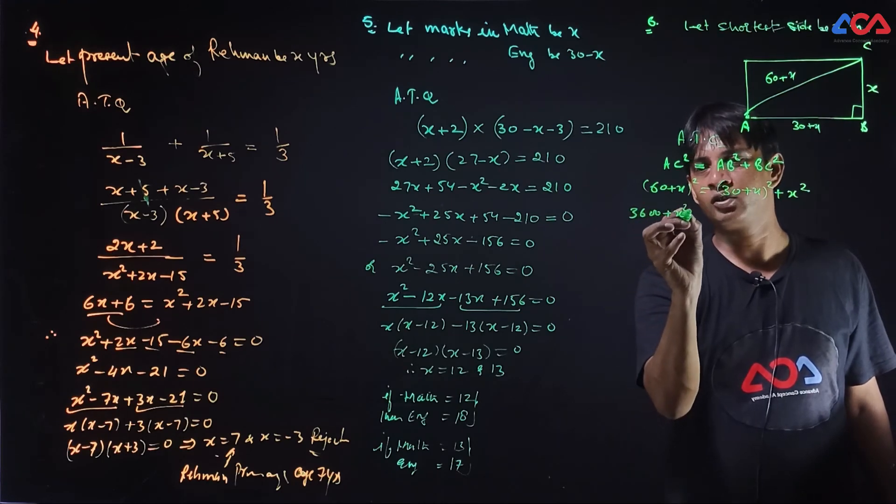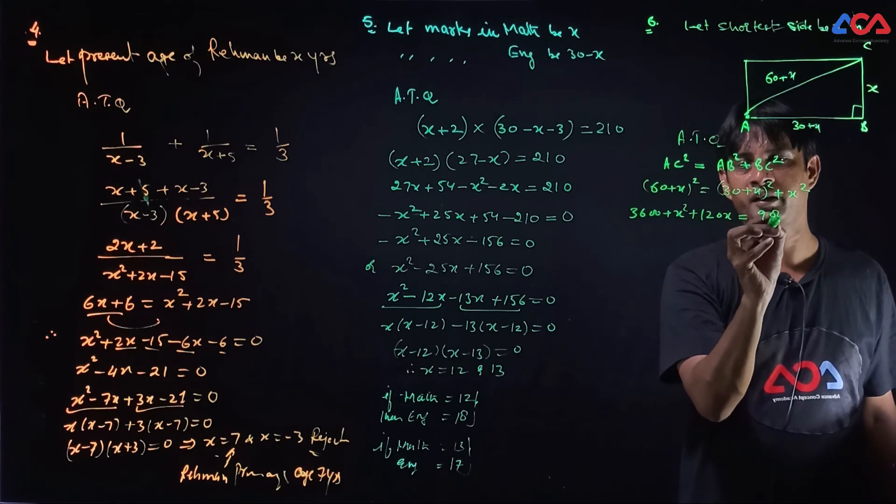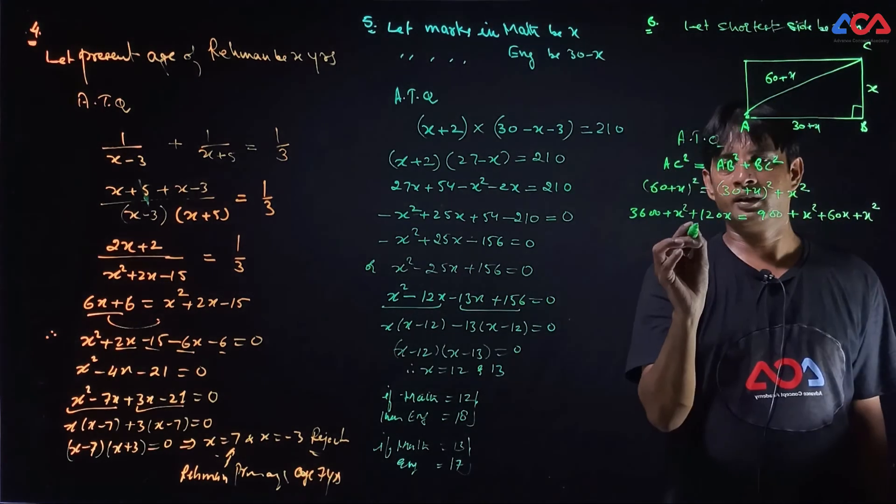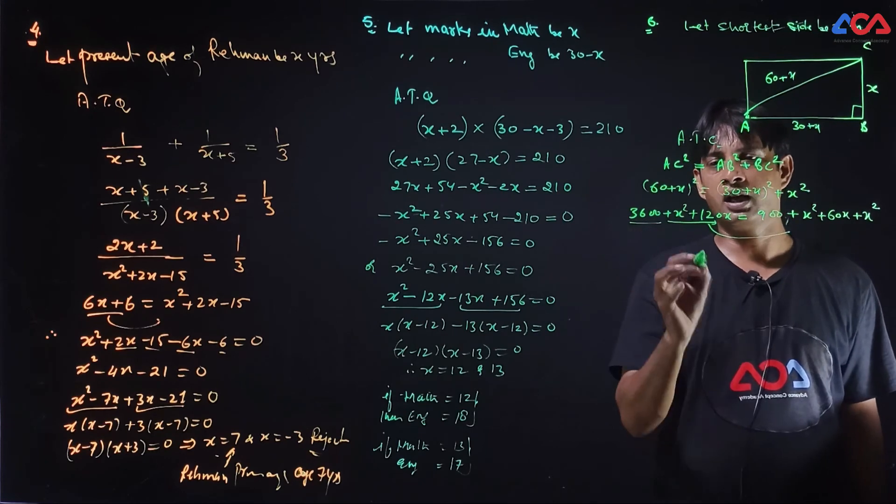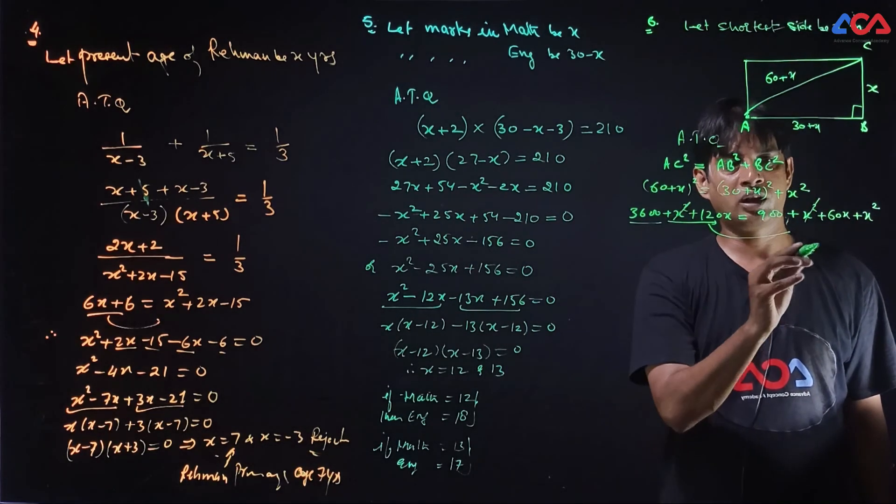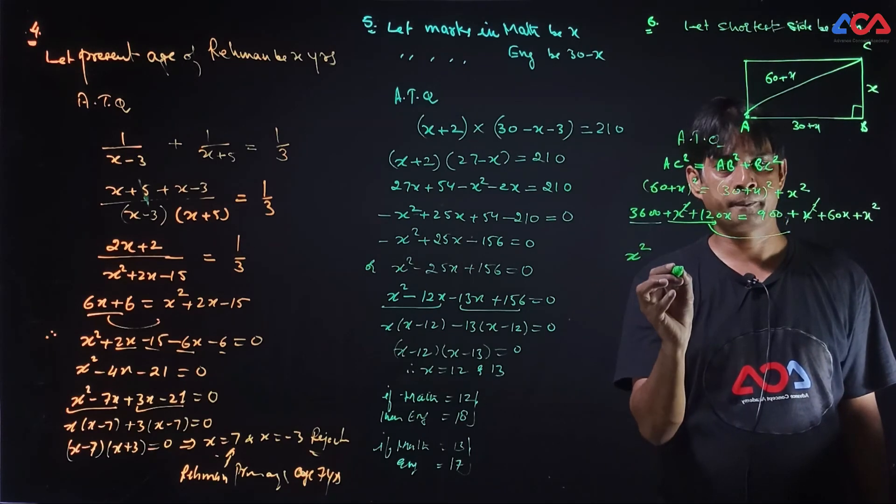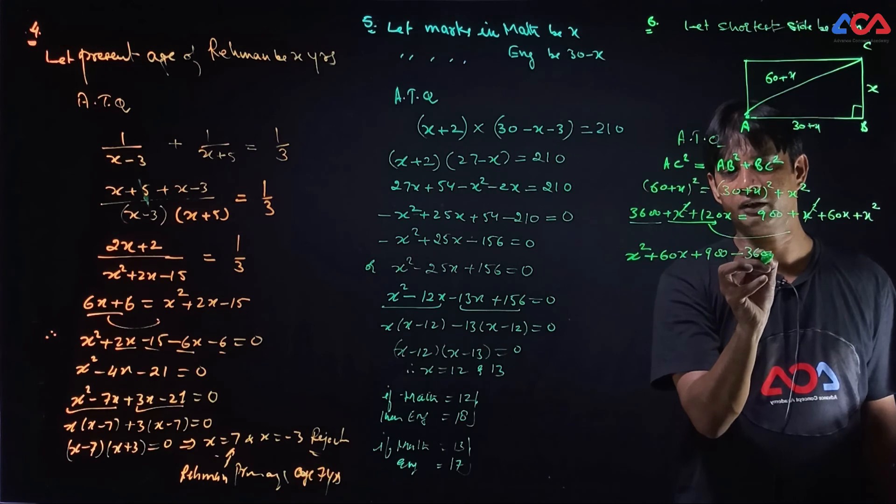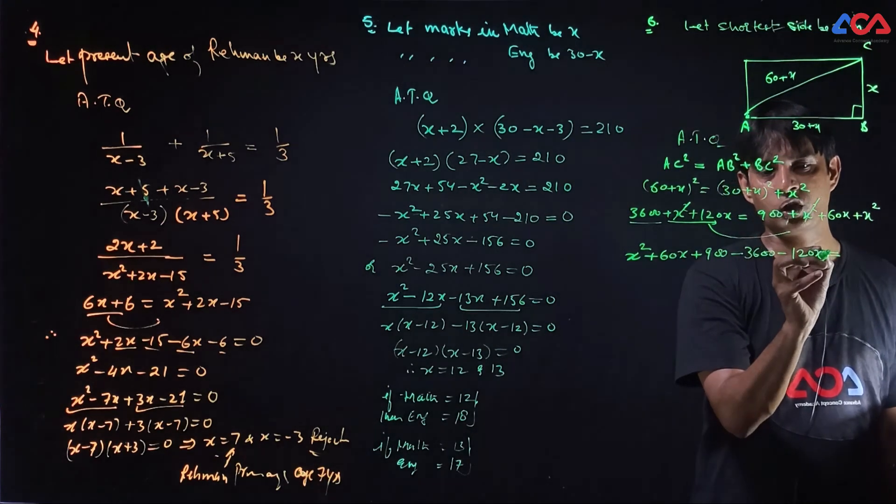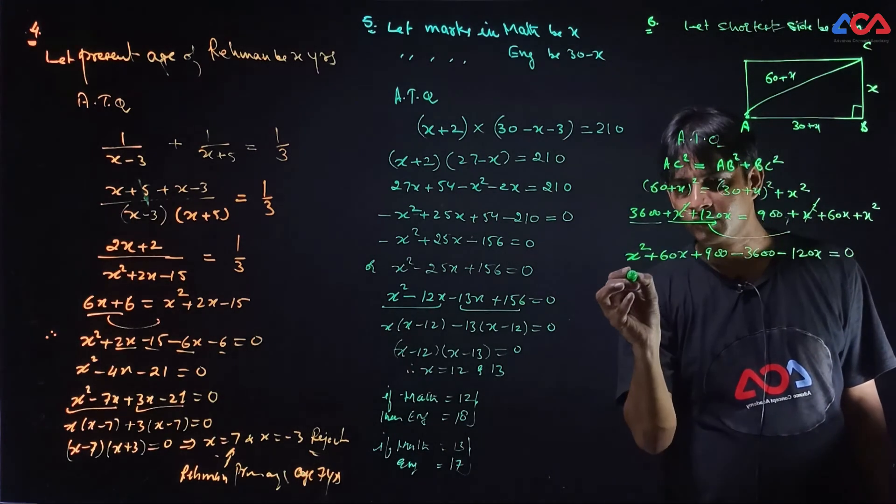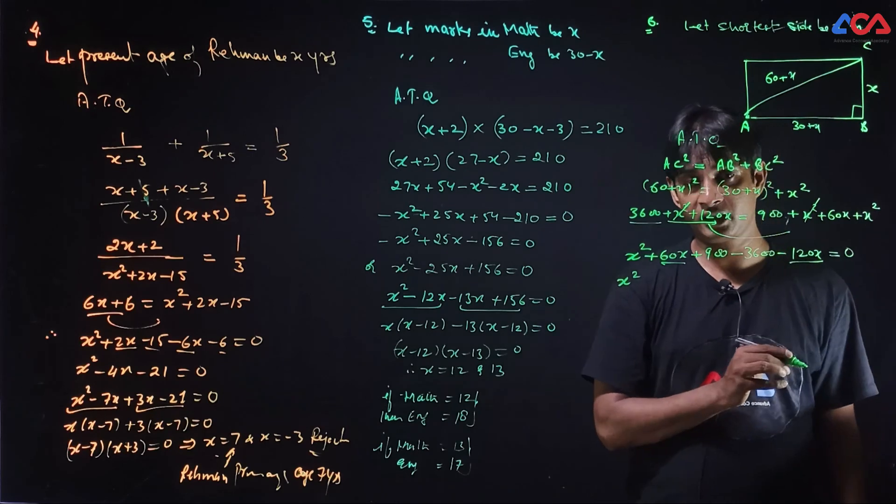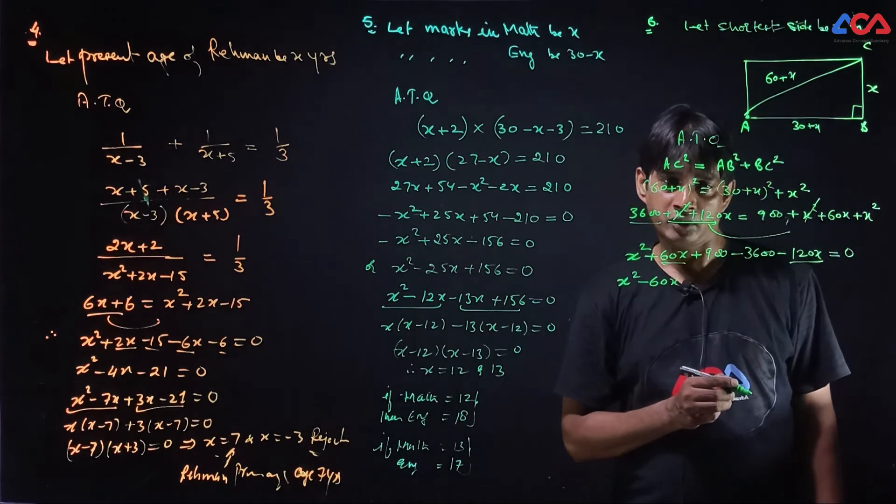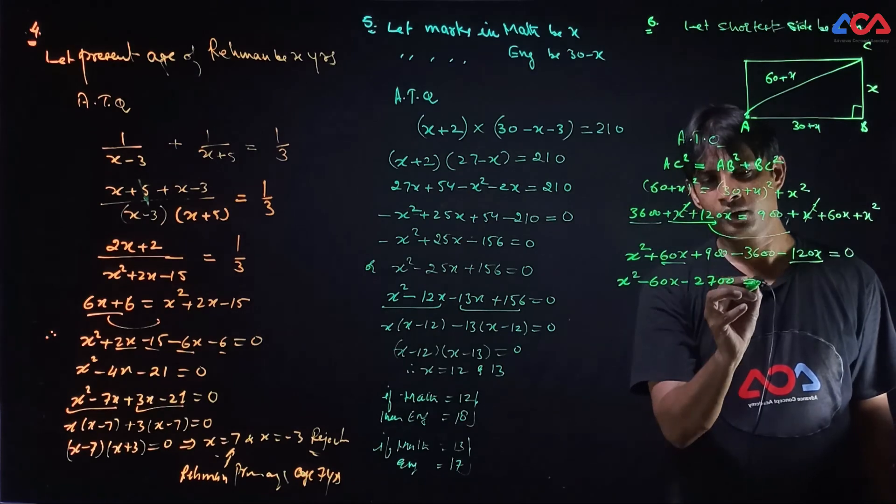3600 plus x square, 120x. Let's be solved. We have solved 900 plus x square plus 60x plus x square. Left value portion to right side. So x square, x square cancel out. x square plus 60x plus 900 minus 3600 minus x square minus 120x which is equal to zero. x square as it is. 60x minus 120x, minus 60x. 900 minus 3600 means minus 2700 which is equal to zero.